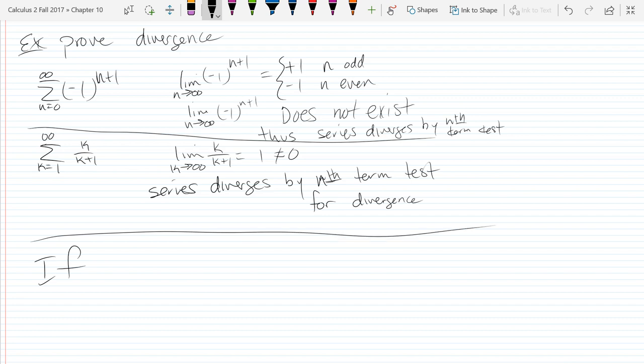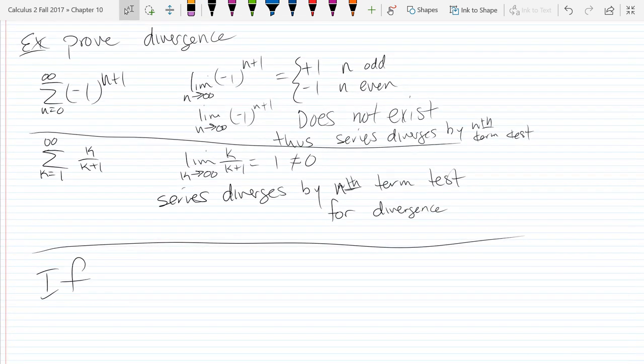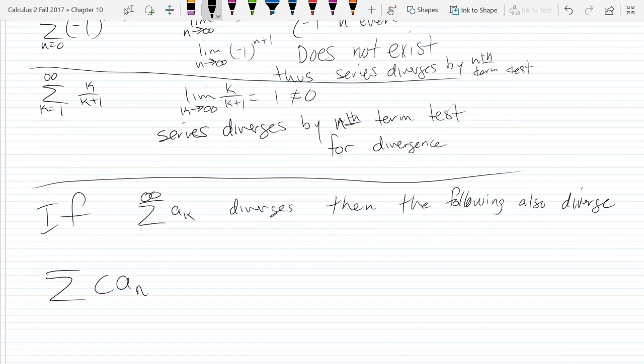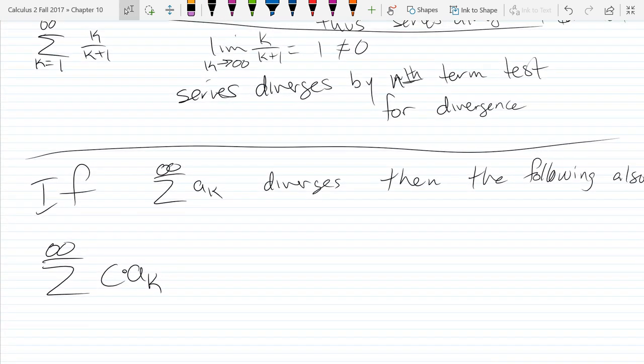All right. Next up, we're going to look at some divergent. If you know some part is divergent, what does that mean about other pieces? So if you already know that sum of AK diverges, then the following also diverge. So if you have a constant times AK, that'll also diverge. There is one exception. What value of C do you think that this could converge for? Zero. Zero. So if you multiply these terms by zero, then this would converge. But of course, this diverges when C is not zero.